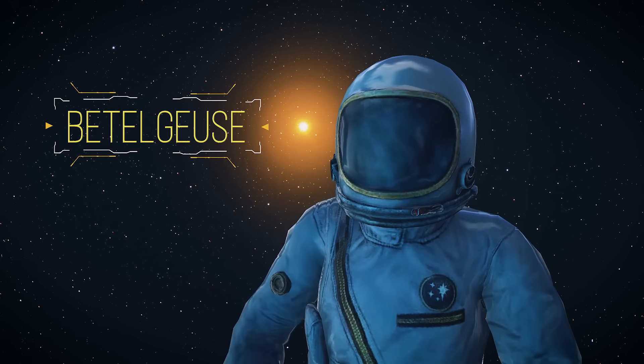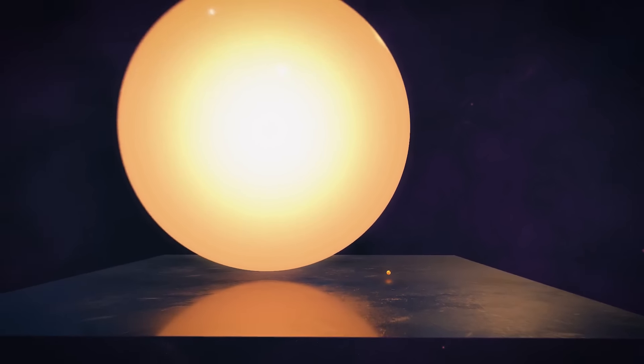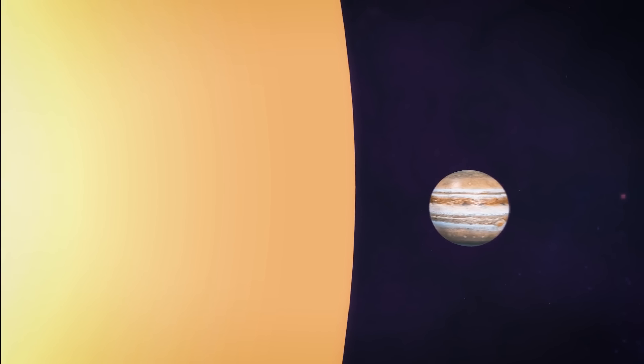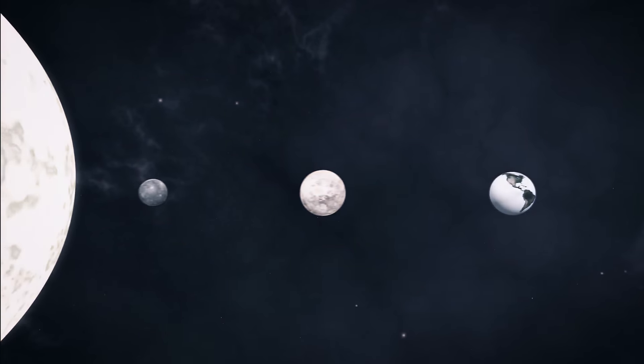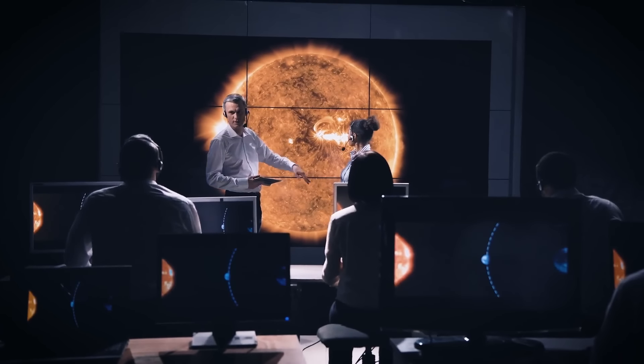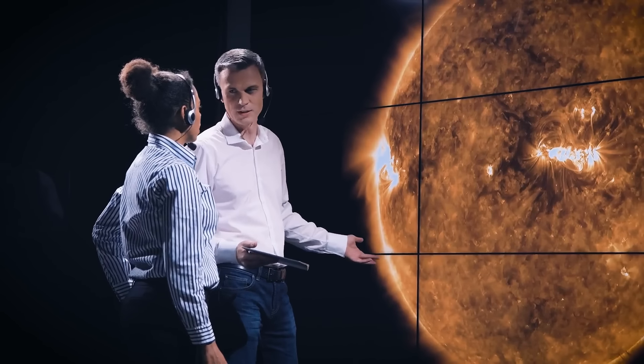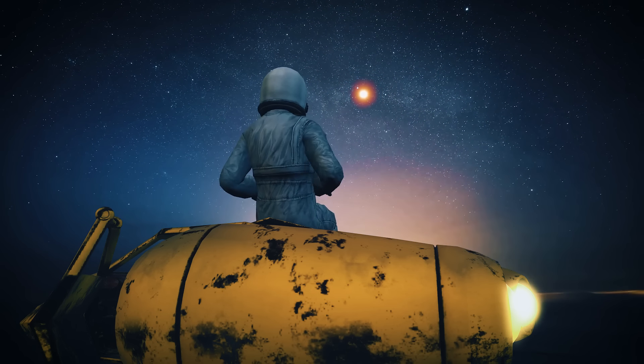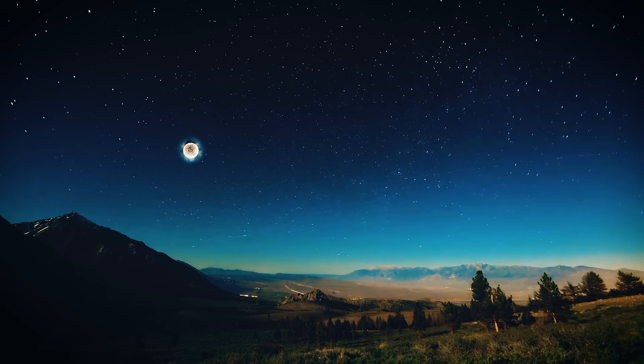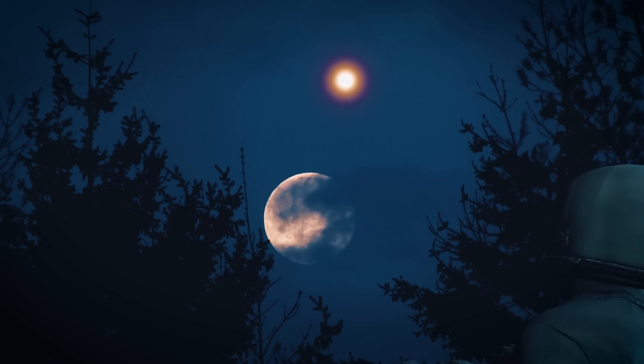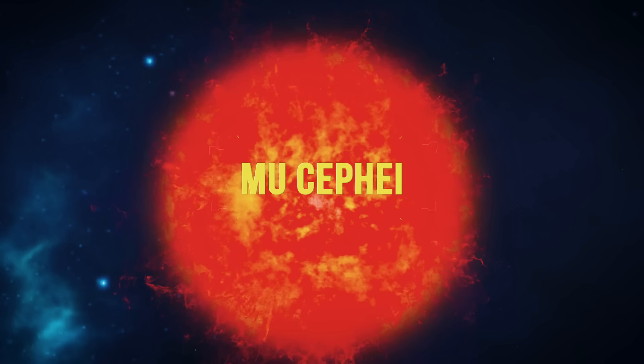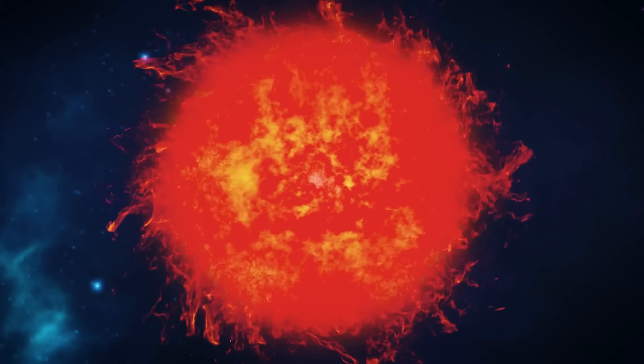Betelgeuse, one of the largest ones visible to the unaided eye. 700 times the size of our Sun. If it took our star's place, its surface would touch the asteroid belt. That's between the orbits of Jupiter and Mars. It would engulf the four inner planets, Earth included. But this star has astronomers very excited. They predict Betelgeuse will explode in a fantastic celestial show in the next 10,000 years. It'll be the greatest astronomical event of all time because we'll be able to observe a supernova at a close but safe enough distance. The exploding star will shine as bright as a half moon. It'll be visible in the daytime sky for a year and at night for several more.